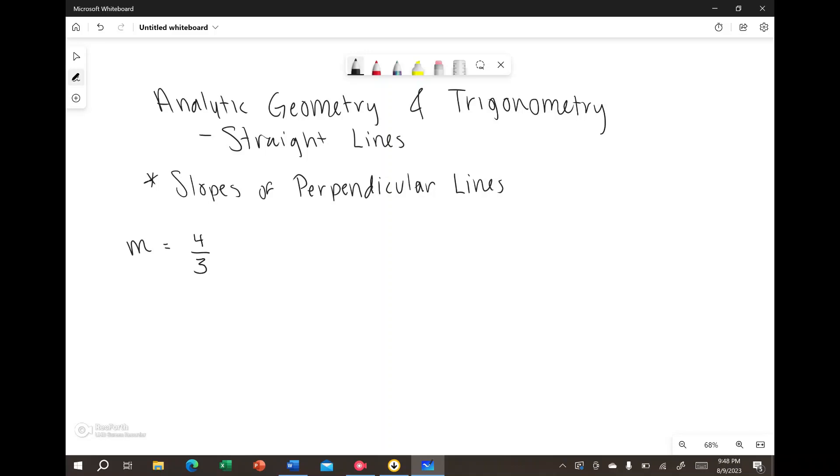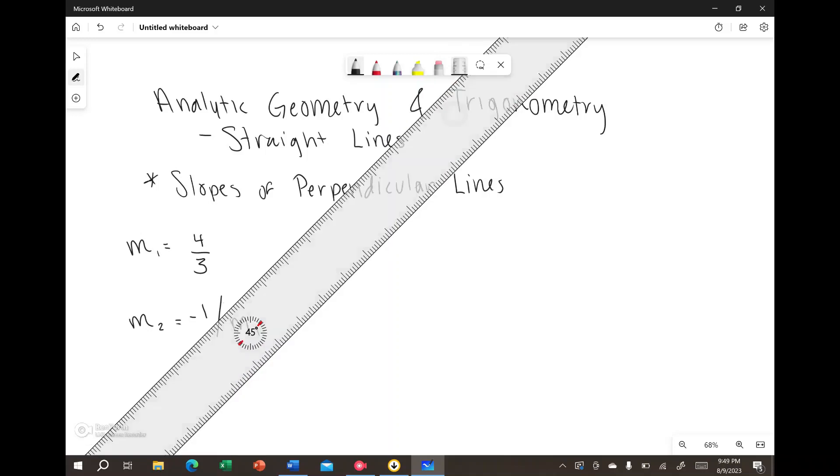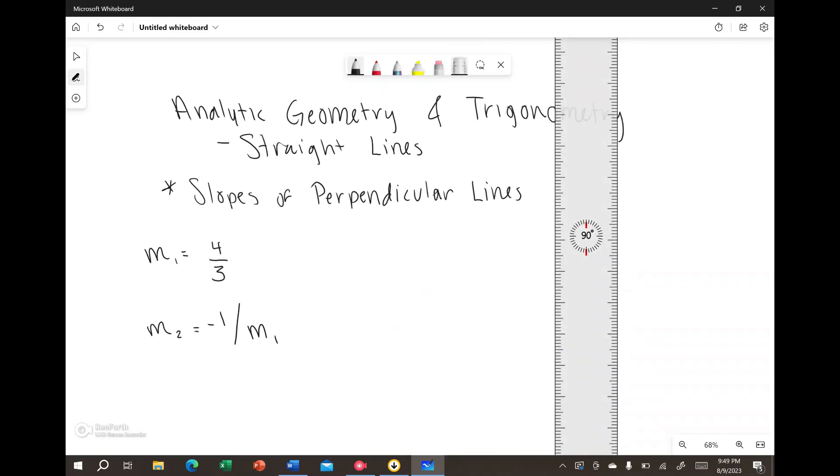So for example, let's start with a slope of 4 over 3, where that's the rise over run. In order to determine the line or slope perpendicular to this slope, it would simply be negative 1 over that slope.